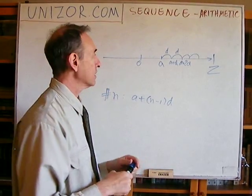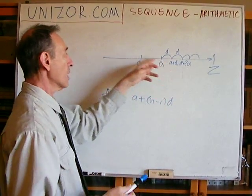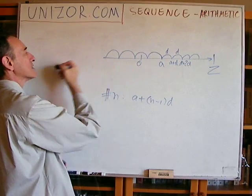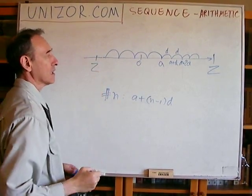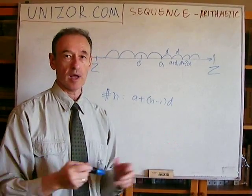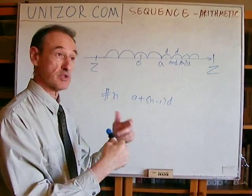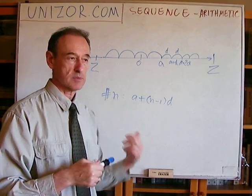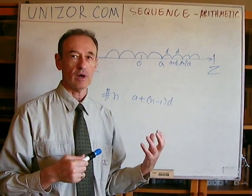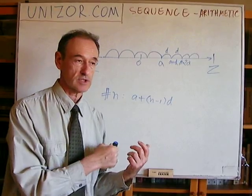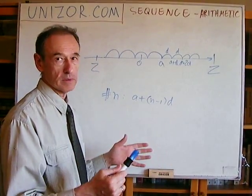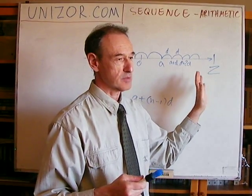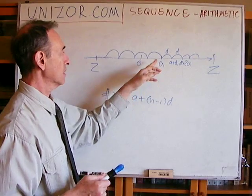On the negative side, if D is negative, adding a negative number means shifting to the left. Eventually, the elements will be smaller than any number Z you choose — they will overcome Z moving to the left — and all subsequent elements of the sequence will also be smaller. So in this case, the value of elements goes to negative infinity. Let's evaluate when, in the positive case, elements become greater than any chosen number Z, and in the negative case, when they become smaller than any Z.